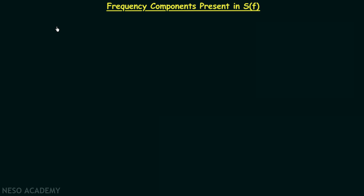We have a clear understanding of the process of sampling, and in this lecture we will find out the frequency components present in the Fourier transform of the sampled signal, which is SF. The sampled signal is ST, and its Fourier transform is equal to SF when frequency is in hertz.